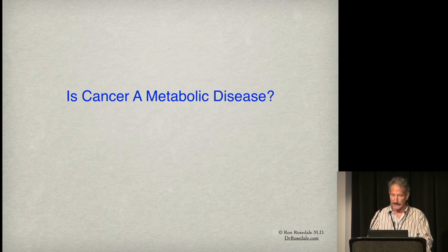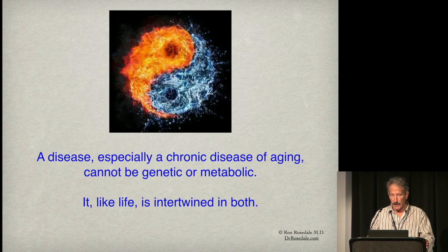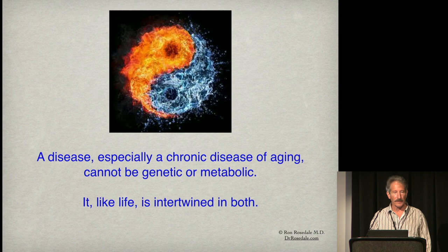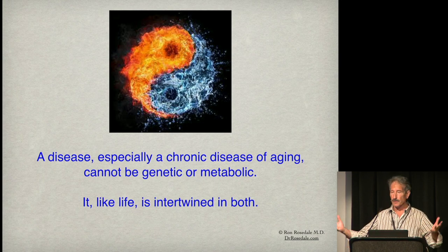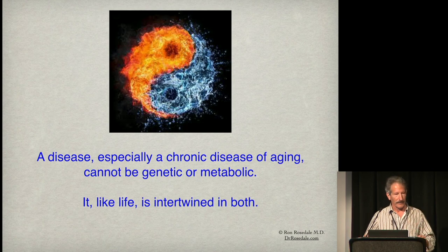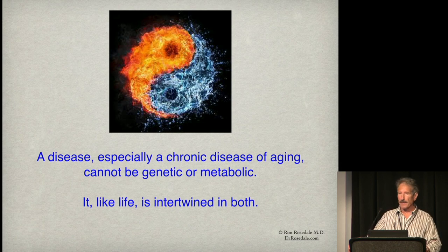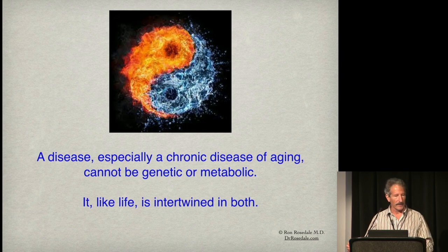Is cancer a metabolic disease? A disease, especially a chronic disease of aging like cancer, cannot be purely genetic or purely metabolic. That's a false argument. If you look at the origin of life, genetics and metabolism came together. The genes make proteins — that's all they do. The proteins regulate metabolic pathways, which turn around to then control genetic expression. You can't have one without the other. They're always intertwined, just like life.